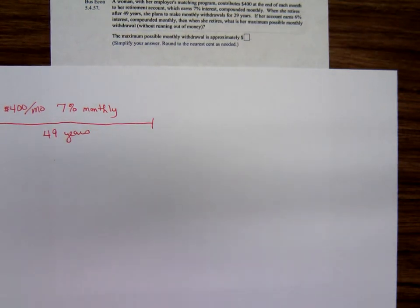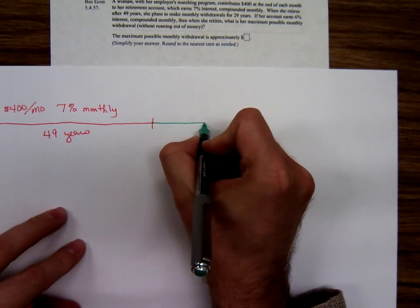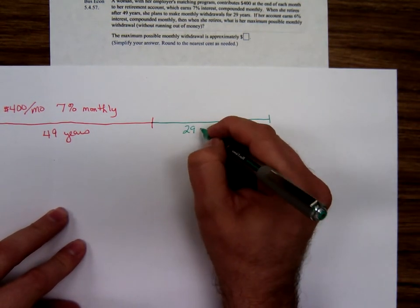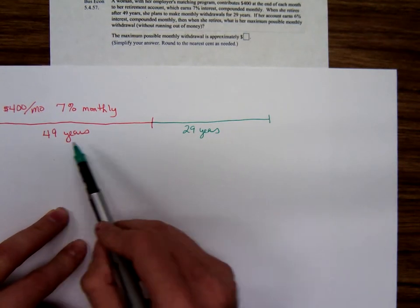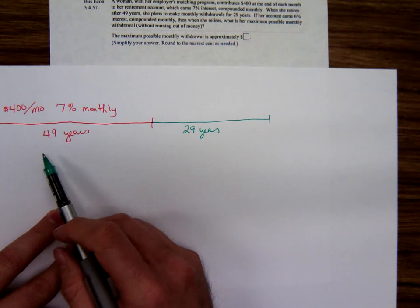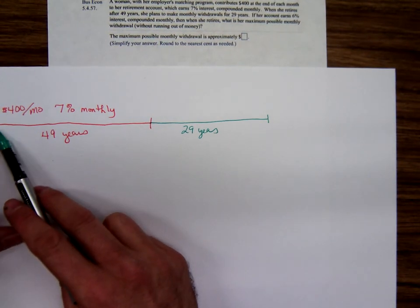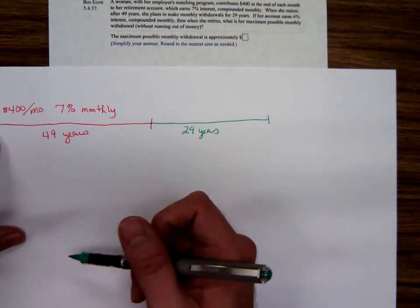The interest is 7% compounded monthly. Then after the 49 years of working, she wants to retire and she wants to take out money. This is a 78-year timeline here. Over the 78 years, she starts with zero, and then she starts saving $400 a month for 49 years.